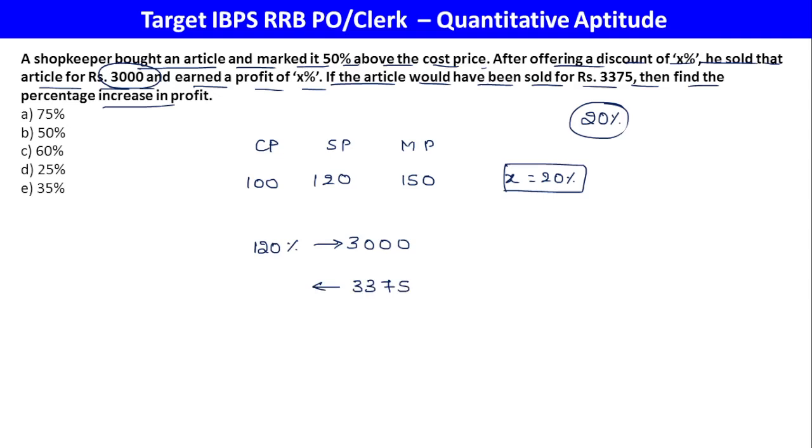So 120 percentage equals 3,000, making 100% equal to 2,500. The new selling price percentage is 135%, giving profit of 35%. Initially it was 20%, now it's 35%, so profit percentage increased by 15 out of 20, which is 75%. Option A is the final answer for this question.